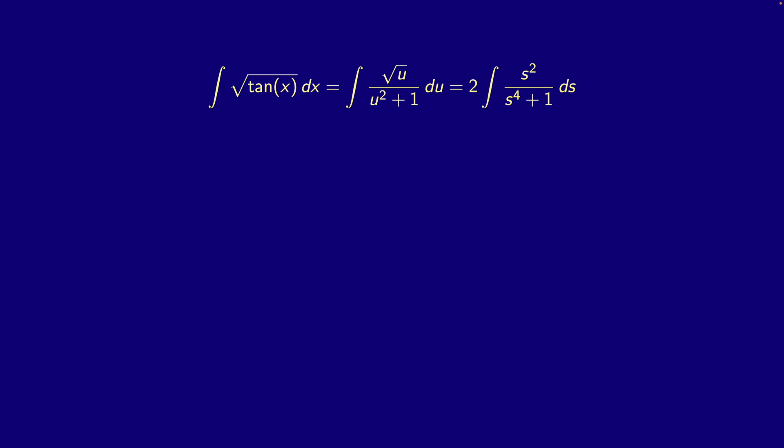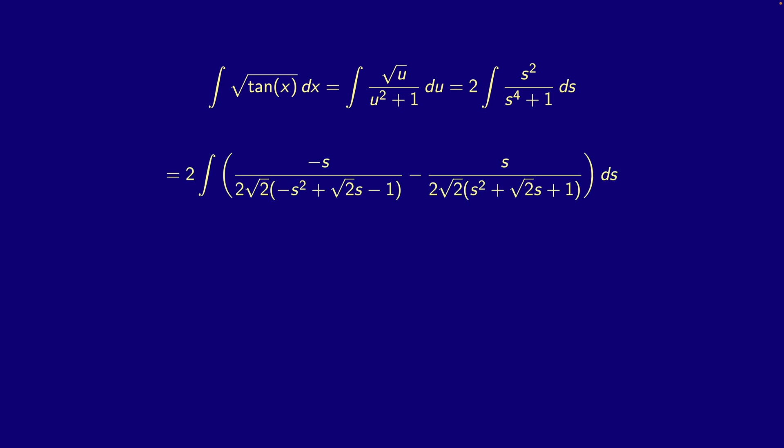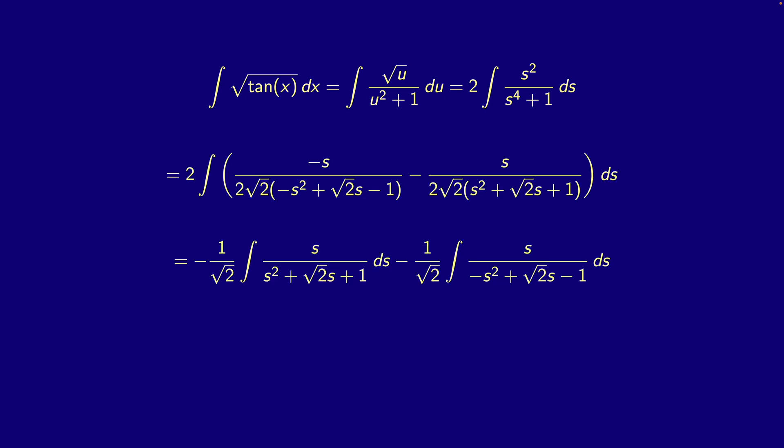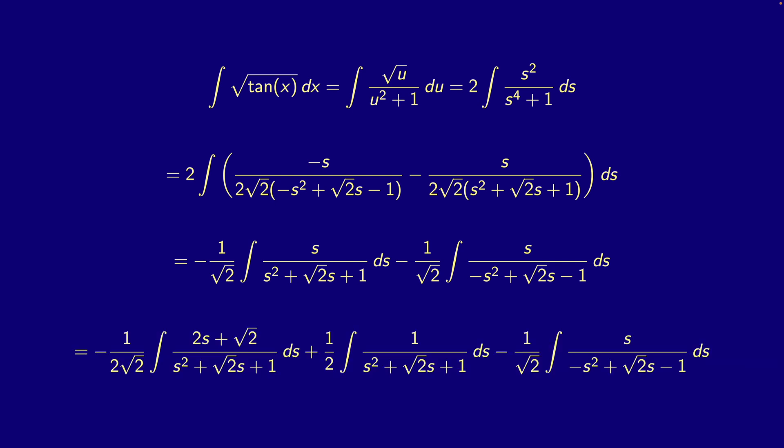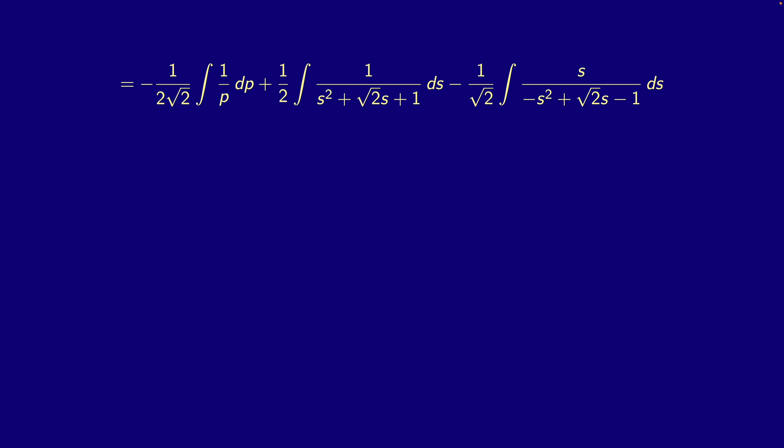Then we use partial fraction decomposition to get this expression, which we then simplify. We can rewrite our leftmost integrand with simpler terms, and this lets us substitute p for our leftmost denominator — s² plus √2·s plus one — and then dp is (2s + √2) ds, which gives us this.